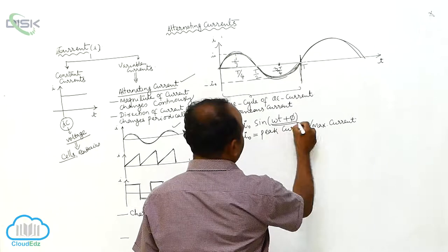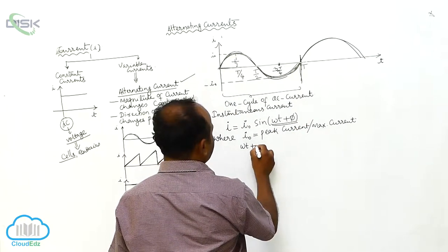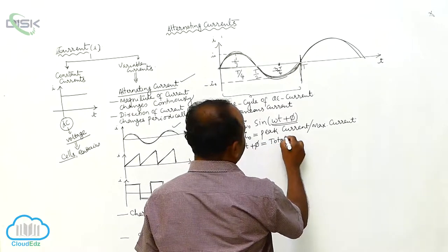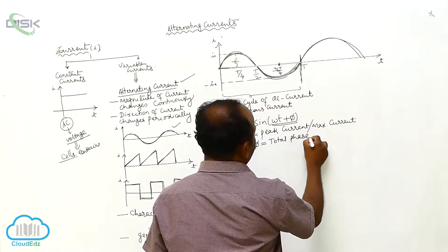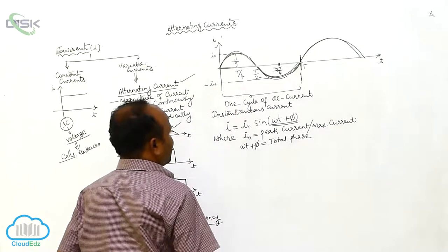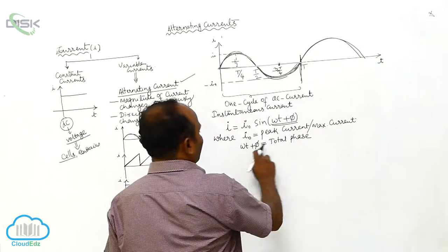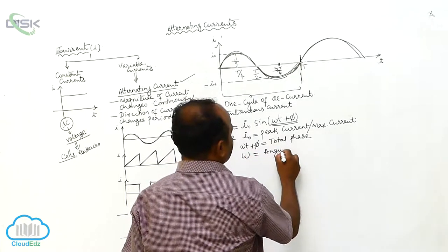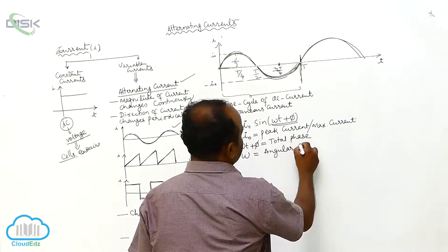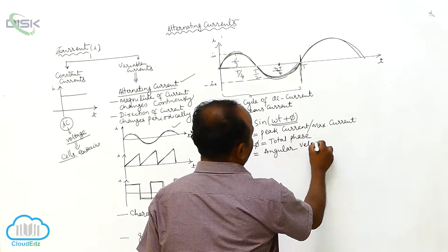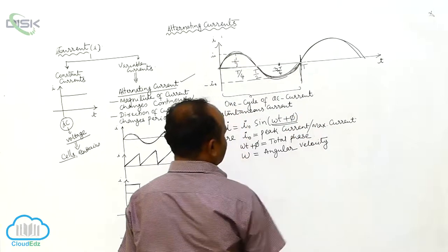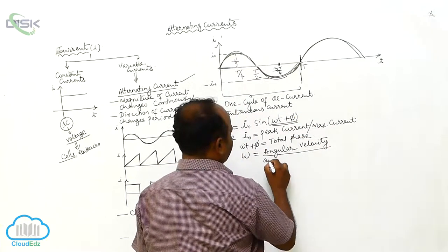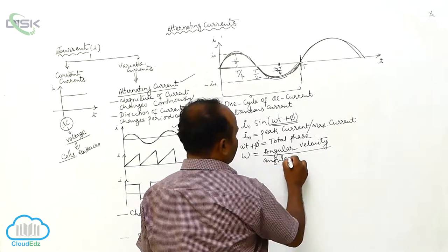Here, ωt + π is called the total phase of the current. Omega (ω) is equal to angular velocity, or let us consider angular frequency. Both terms — angular velocity and angular frequency — refer to the same quantity.